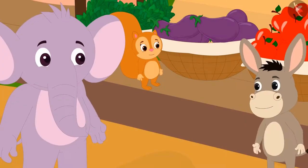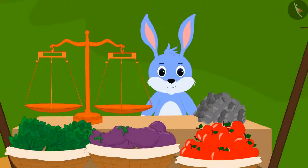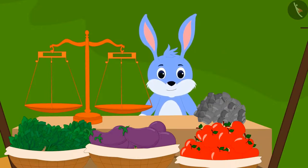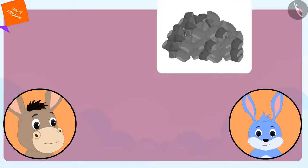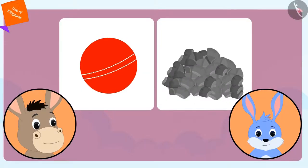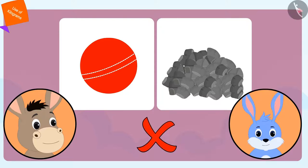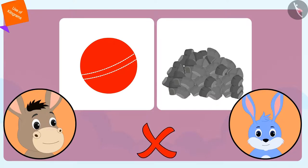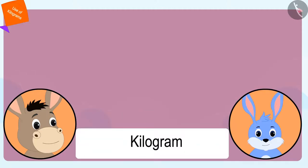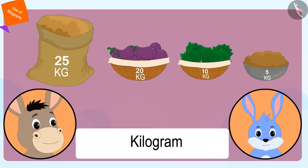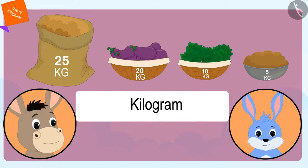Bhoala explained this to Chanda and Appu. Banni asked Bhoala that if he had to weigh anything, how could he do it? Bhoala explained that because objects like stones and balls are not always of the same weight, we cannot use them to measure weight. Therefore, to measure the weight of any object, we use a unit called the kilogram. A kilogram is a unit of measuring weight that always remains the same.